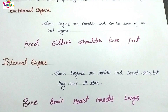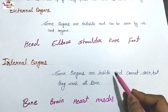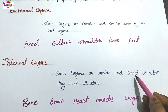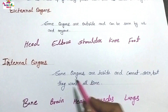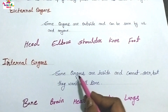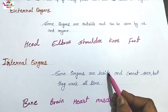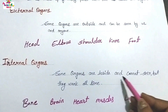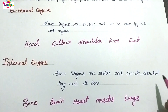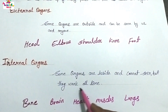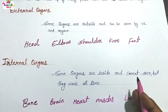Now we read about internal organs. Some organs are inside and cannot be seen, but they work all the time. Kuch organs andar hotay hain — jinhe hum dekh nahin saktay hain, lekin they work all the time — pratyek samay kaam karte hain.